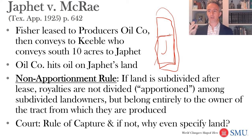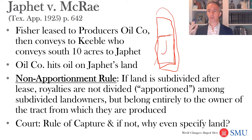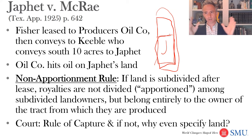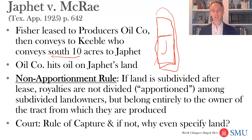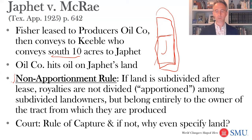The court considers whether it should be shared and says: the way the rule of capture works, the oil belongs to whose land it's produced from. And if what we really wanted here was to share and share alike, why would you even specify that it was the south 10 acres? Why not just give Jaffet a 10-acre interest in the entire tract? It's a 15-acre tract — just give them two-thirds of that general mineral interest. They specify the south 10 acres because it wanted to say if production was on the south 10 acres, it all goes to Jaffet. Therefore, non-apportionment is the rule.